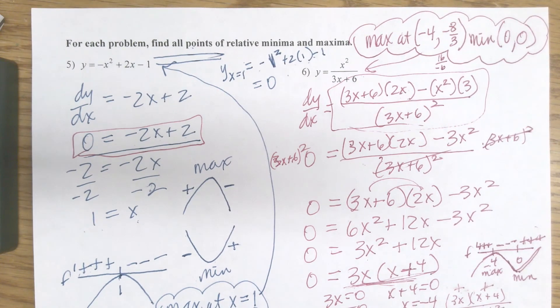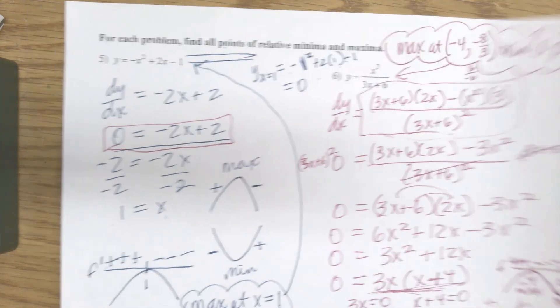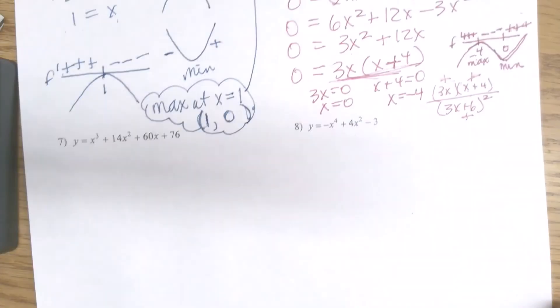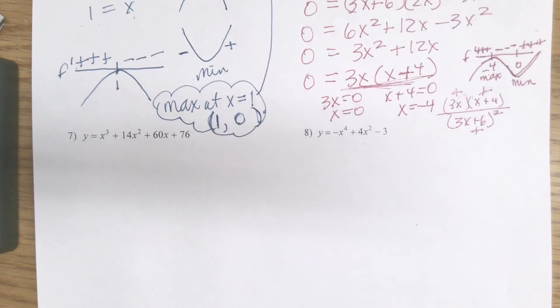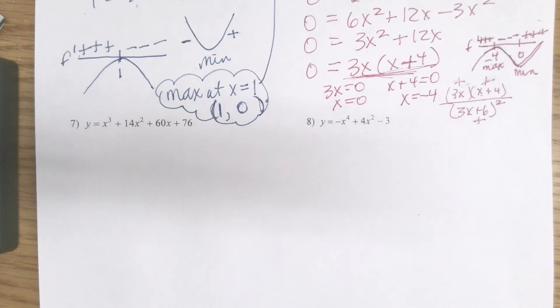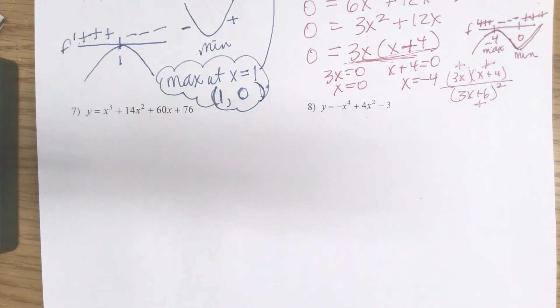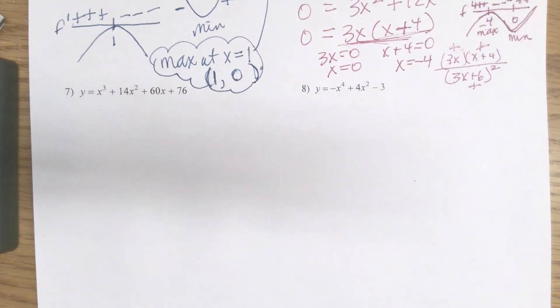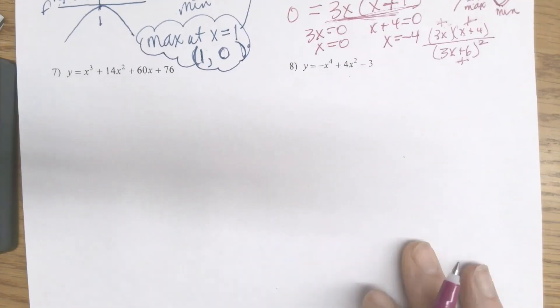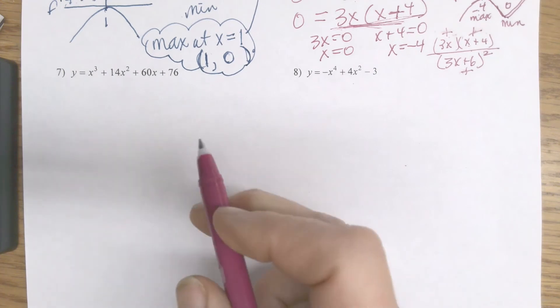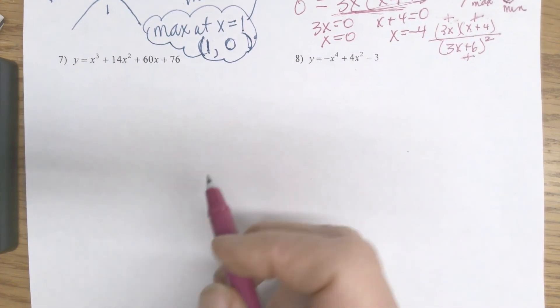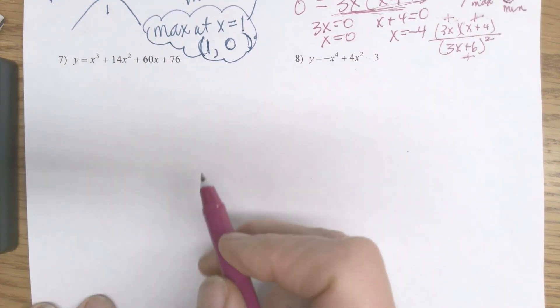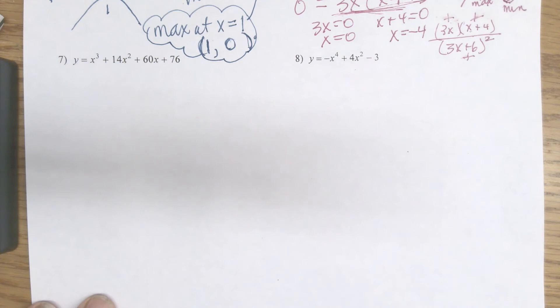To summarize the process: take your derivative, set it equal to 0, do your first derivative test using an f prime chart to see if it's a max or a min by checking test points, and then find the actual point by substituting the x value back into the original function.